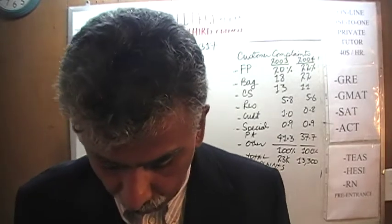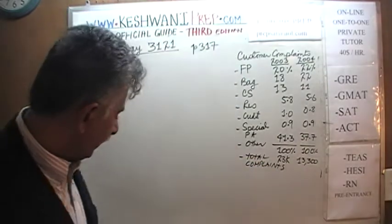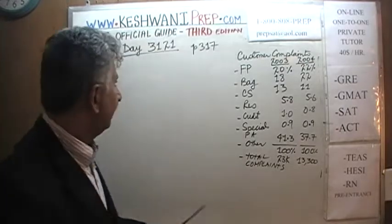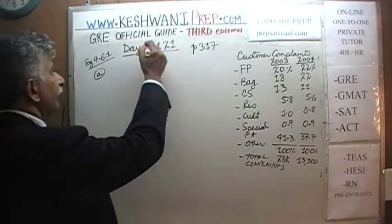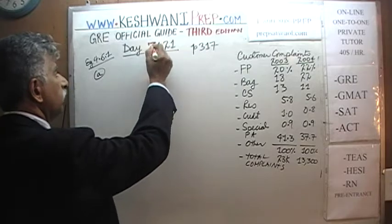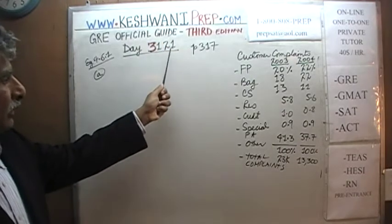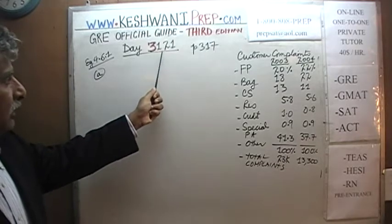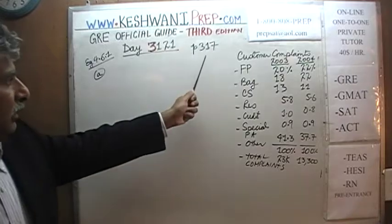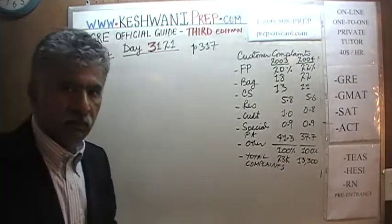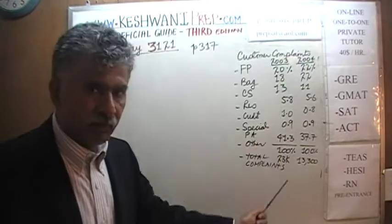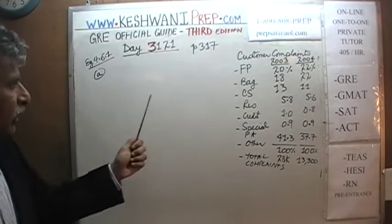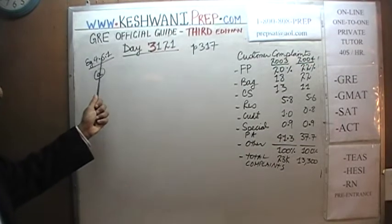Today is our lesson number 121, to signify the fact that we are in the third edition. Today we will solve the problem that you will find on page number 317. Make sure that the book is in front of you, turn to page 317, and read the problem to yourself. There are a lot of abbreviations I make here, so make sure you have the book in front of you. Example 4.6.1.